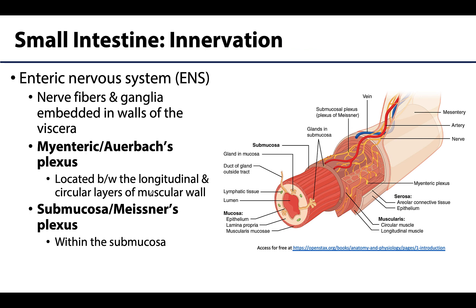Moving on to innervation — the gastrointestinal tract is one of the more complex areas in terms of innervation. It has its own nervous system referred to as the enteric nervous system, or ENS, and it also has autonomic supply. The ENS is often described as its own system or as part of the larger autonomic nervous system. It is a complex series of nerve fibers and ganglia embedded in the walls of the GI tract viscera, with two systems of plexuses.